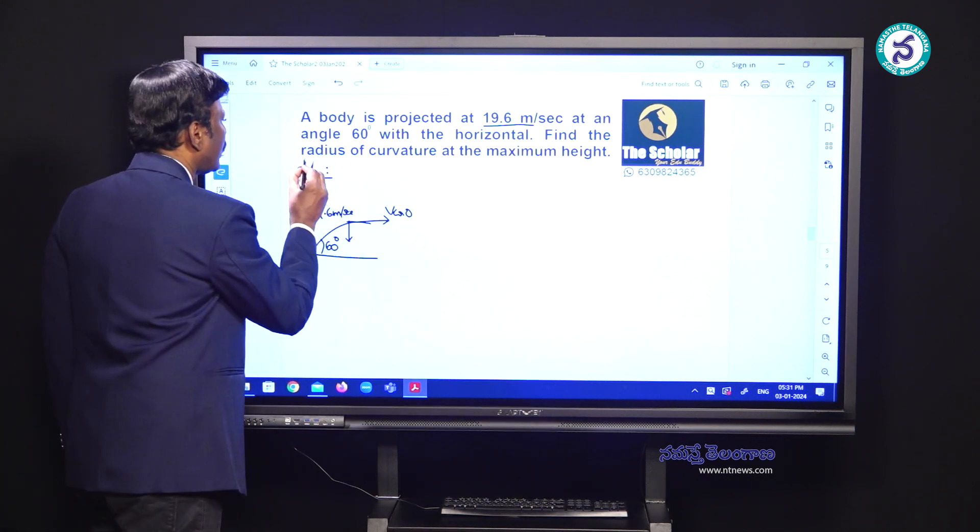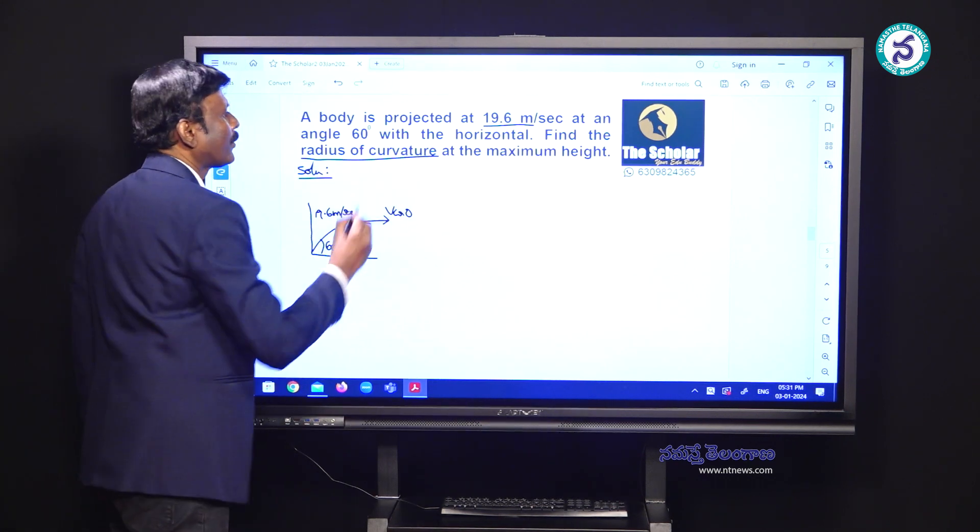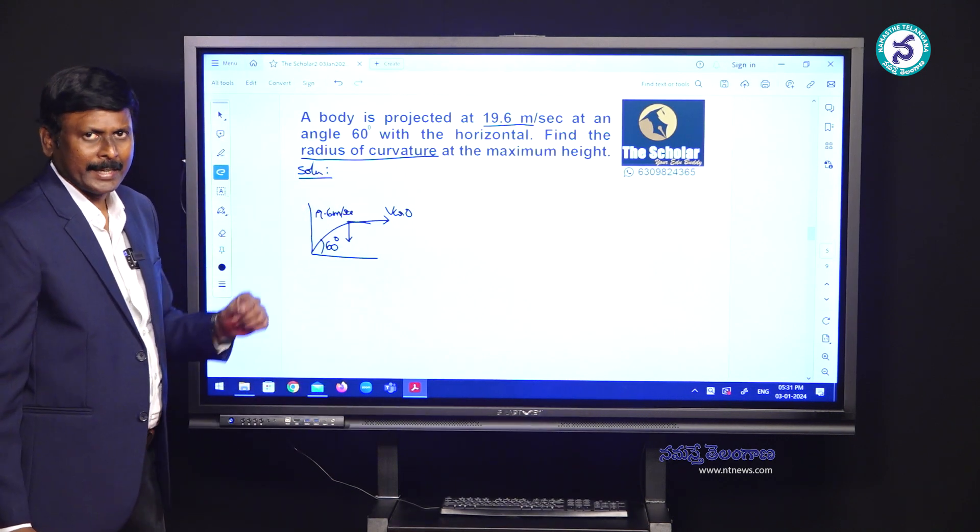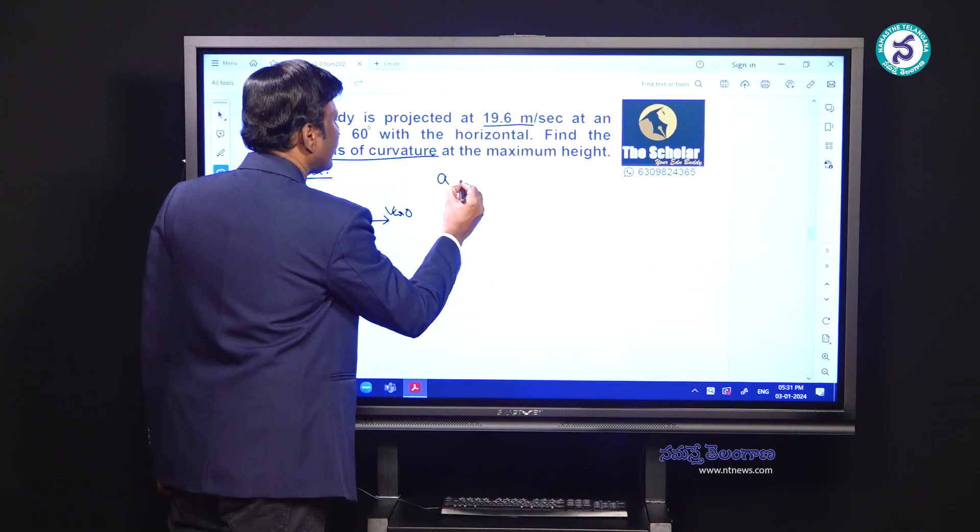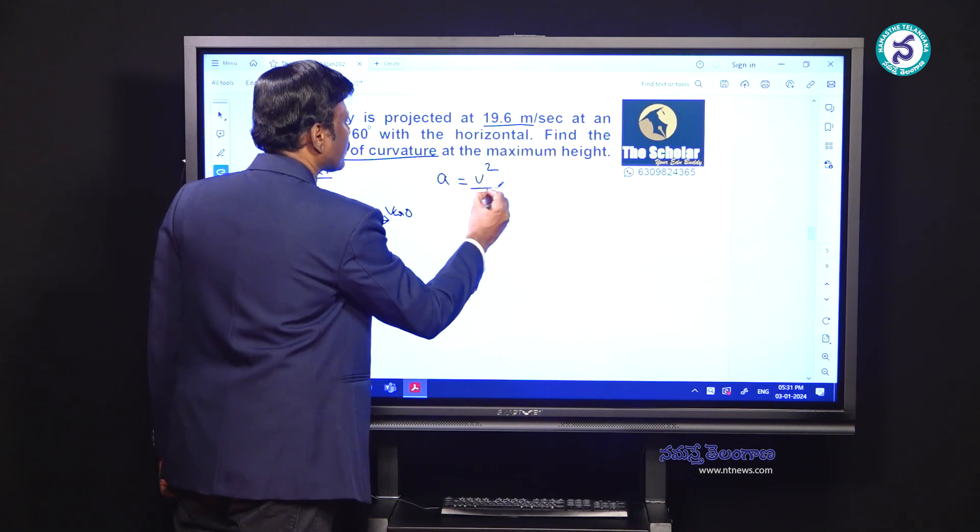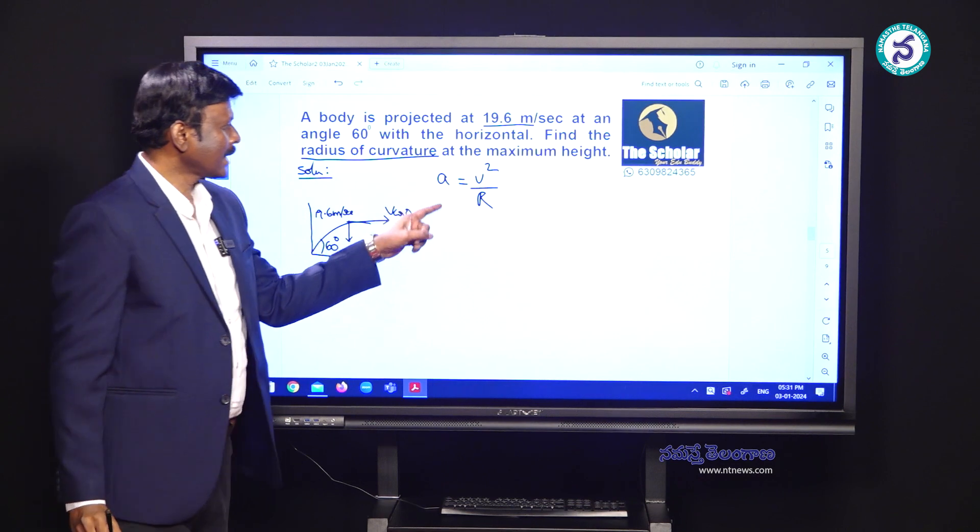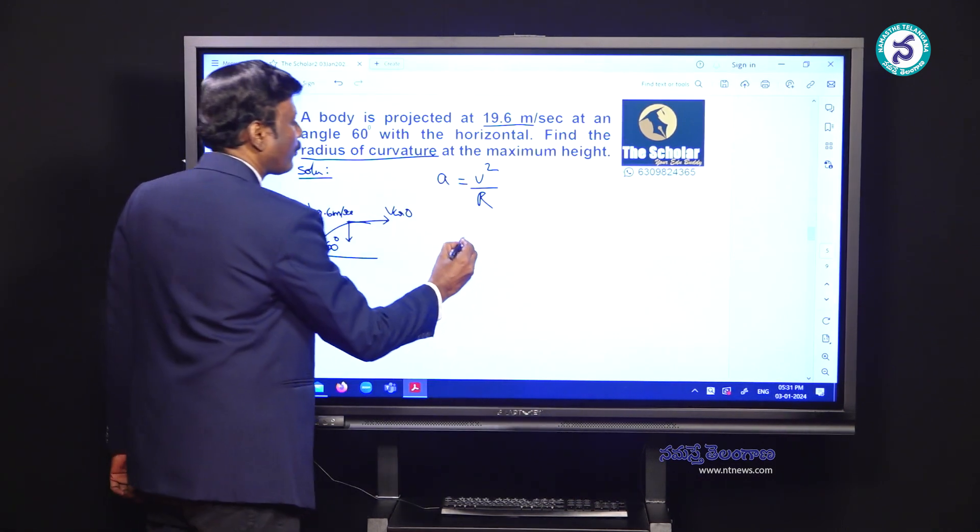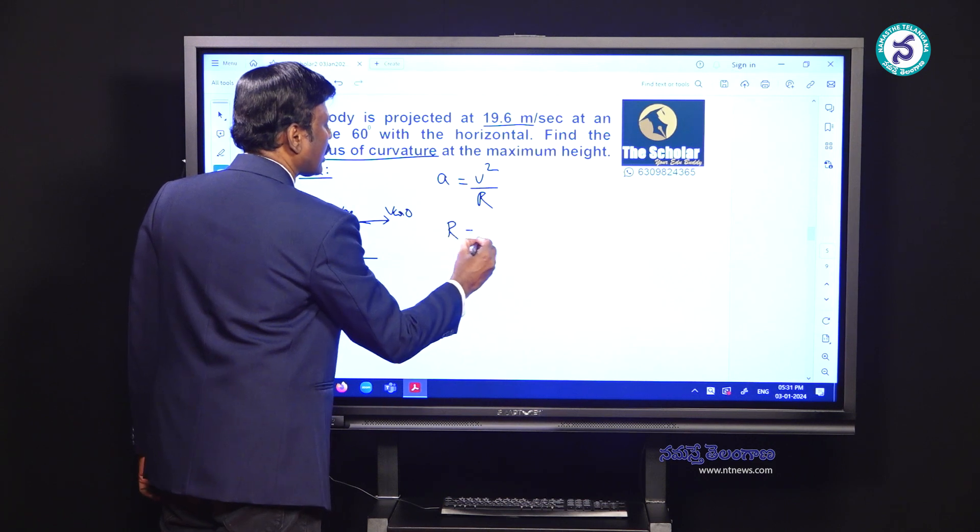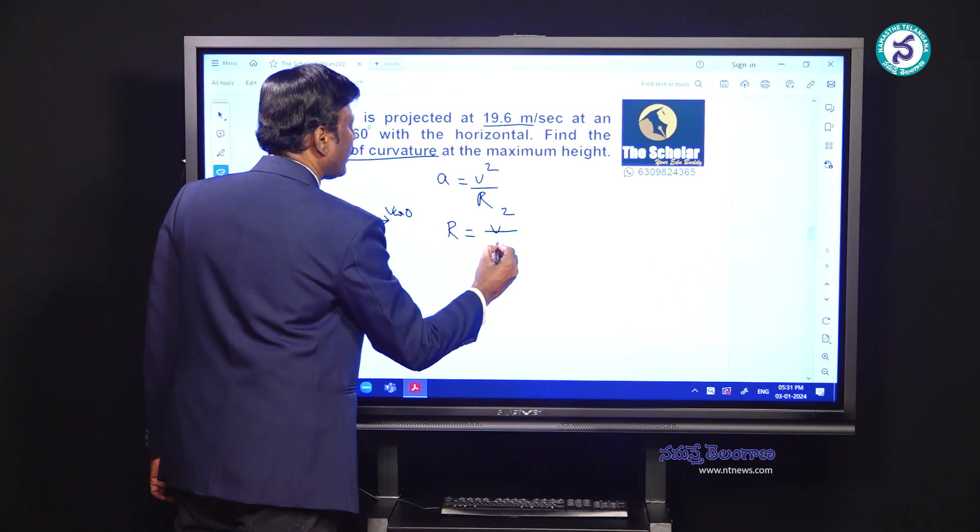Now since you are asked to find out the radius of curvature at the maximum height, let us come to a formula for that. You know acceleration A is equal to V squared by R, where A is acceleration, V is velocity and R is the radius of curvature. From this, radius of curvature R is equal to V squared by A.